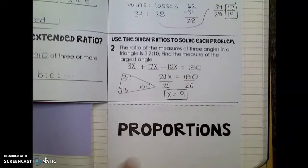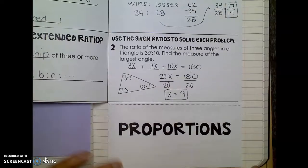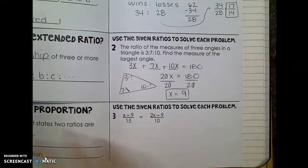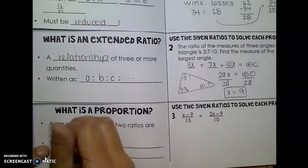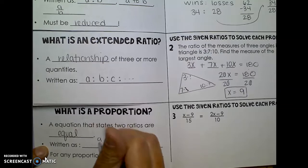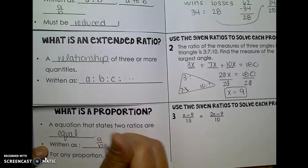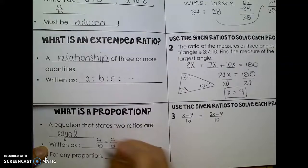Last but not least, a proportion is two ratios that are equal to each other. So an equation that states two ratios are equal. We always want to write that as A over B equals C over D, so fraction equals a fraction.